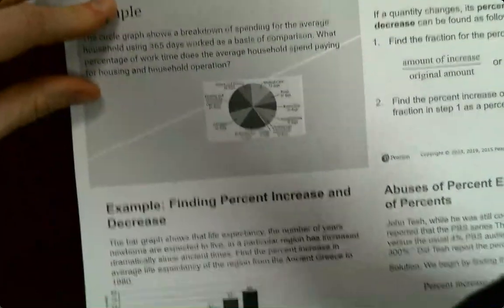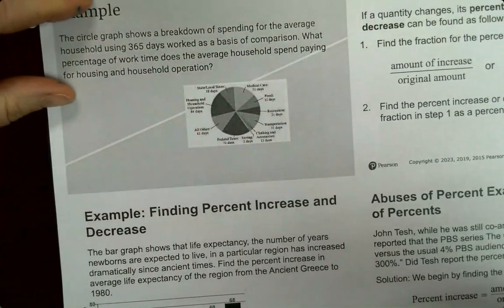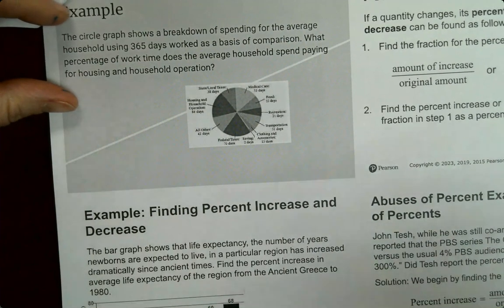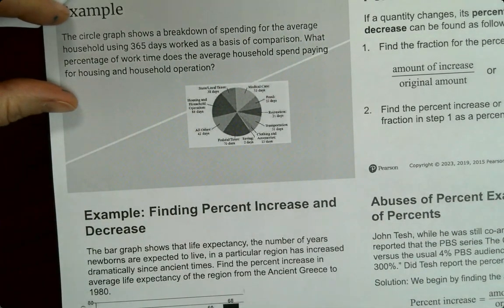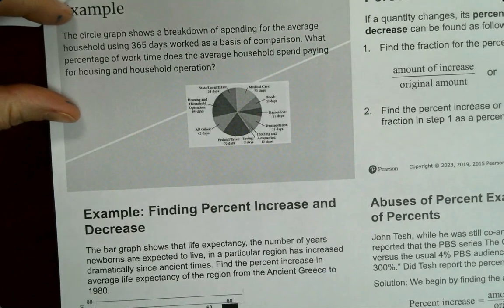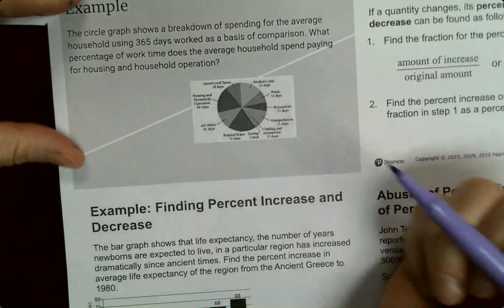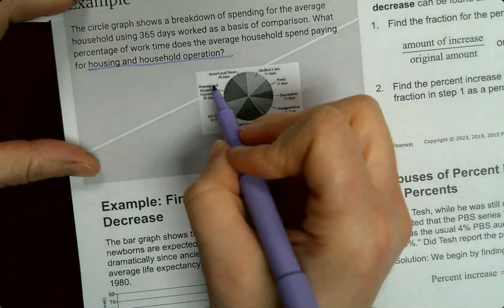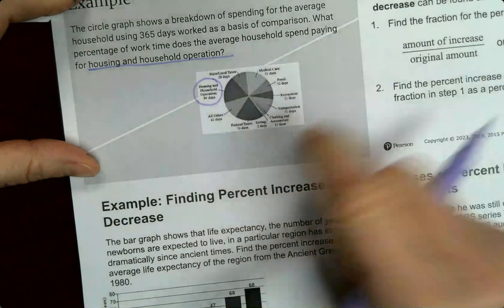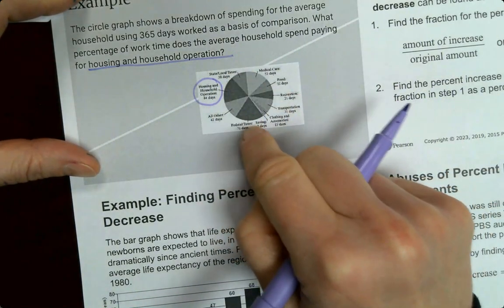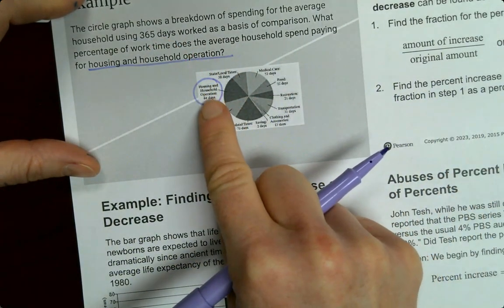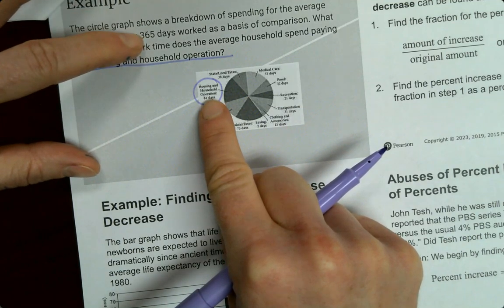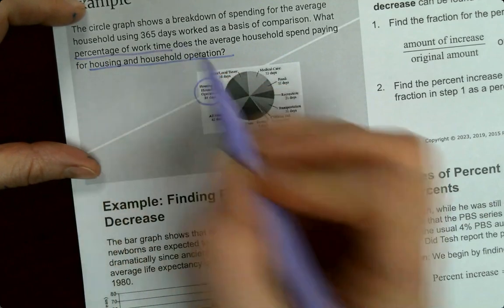Now let's look at it in a graph form. How do we find a percent using graphs? Circle graph shows a breakdown spending for the average household using 365 days worked as a basis of comparison. What percentage of work time has the average household been paying housing and household operations? So we're looking at what percent. So 100% would be the whole thing. It'd be all 365 days. We want to find out how many days, which is 64, out of the 365, what the percent is.